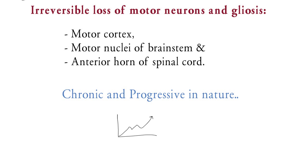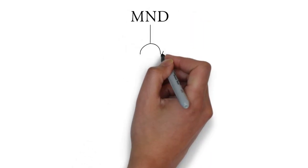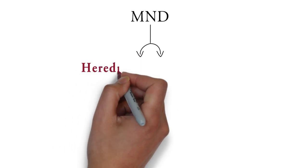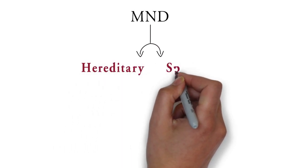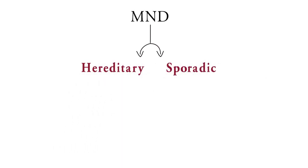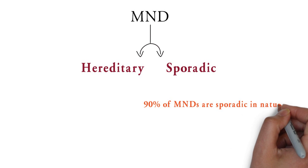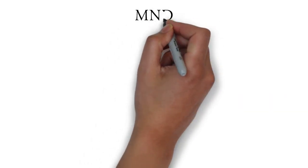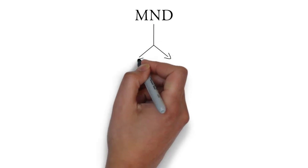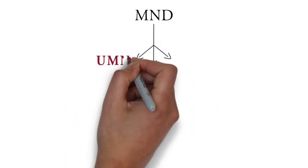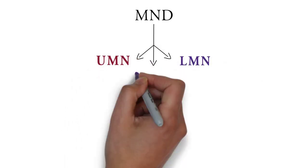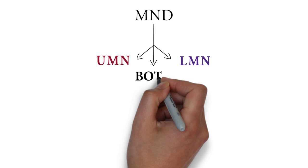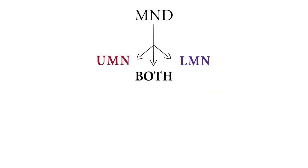Now let's see MNDs systematically. They can be classified depending on the following. First, whether it is hereditary or sporadic — just remember that 90% of MNDs are sporadic in nature, so there won't be any family history. The second classification is whether the degeneration affects upper motor neurons, lower motor neurons, or both, and this is the main clinical classification we will discuss.